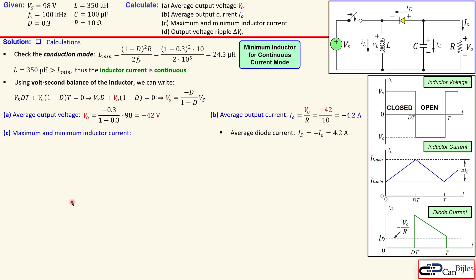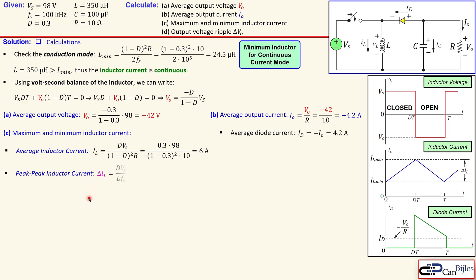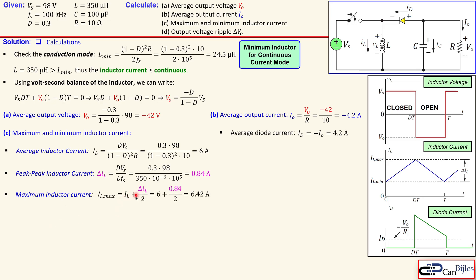For the maximum and minimum inductor currents, the average inductor current is calculated using the formula for the buck-boost converter. With the duty cycle, input voltage, and resistor values, this gives exactly 6 amps. The peak-to-peak inductor current using the duty cycle, input voltage, inductance, and switching frequency gives 0.84 amps. The maximum inductor current is the average plus half the peak-to-peak, giving 6.42 amps, and the minimum is 6 minus half of 0.84, giving 5.58 amps.